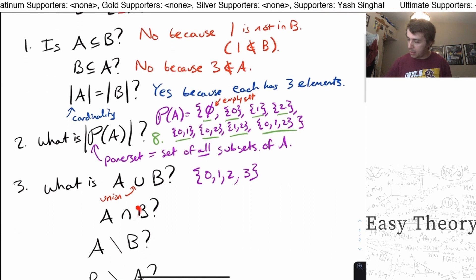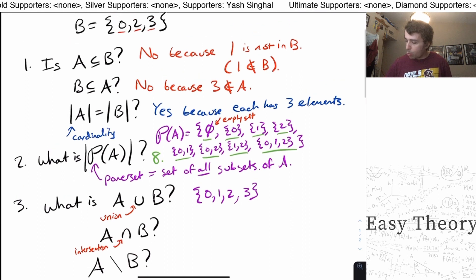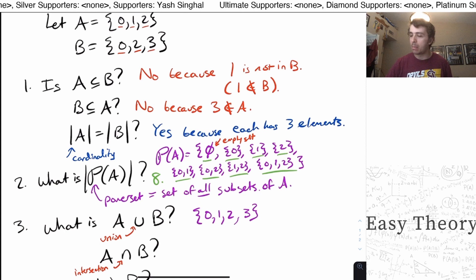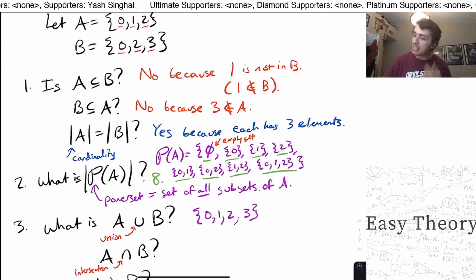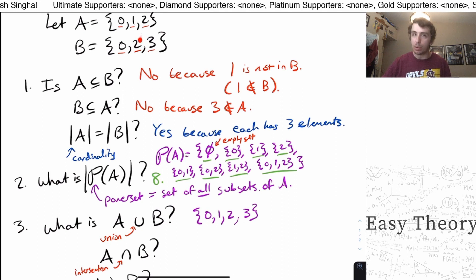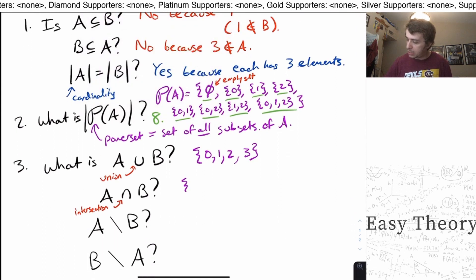This upside-down U represents something called intersection — everything that is in common between the two sets, the elements that are in both sets. In this case it's 0 and 2, because 0 is in both sets, 1 is not in B, 2 is in both sets, and 3 is not in both sets. So the intersection is {0, 2}.